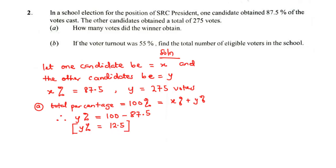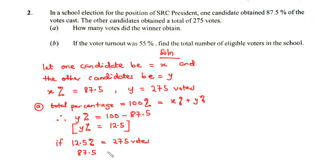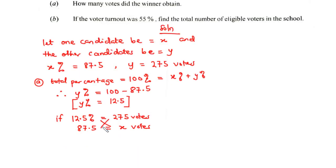If we know that 12.5% corresponds to 275 votes, we can find the actual number of votes that 87.5% corresponds to. Using ratio and proportion: if 12.5% corresponds to 275 votes, then 87.5% corresponds to X number of votes. We cross-multiply to get: 12.5 × X = 87.5 × 275.